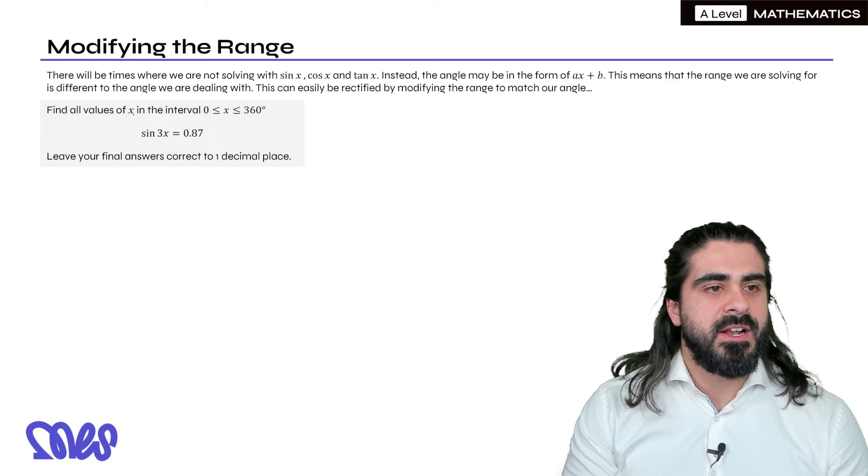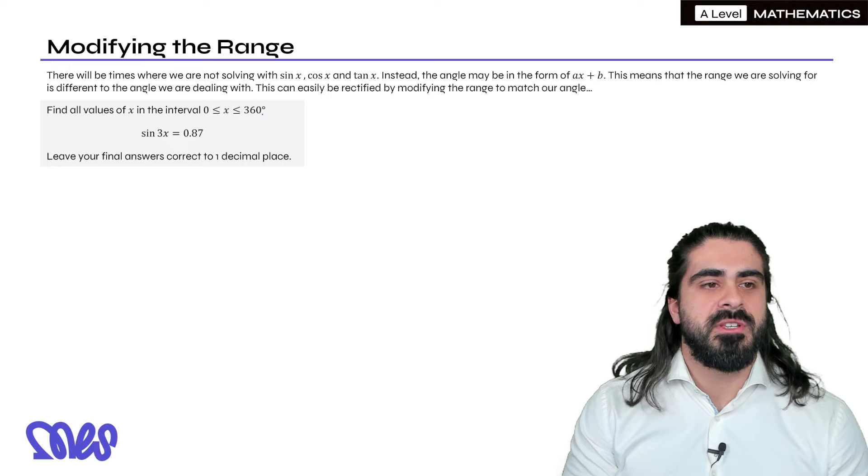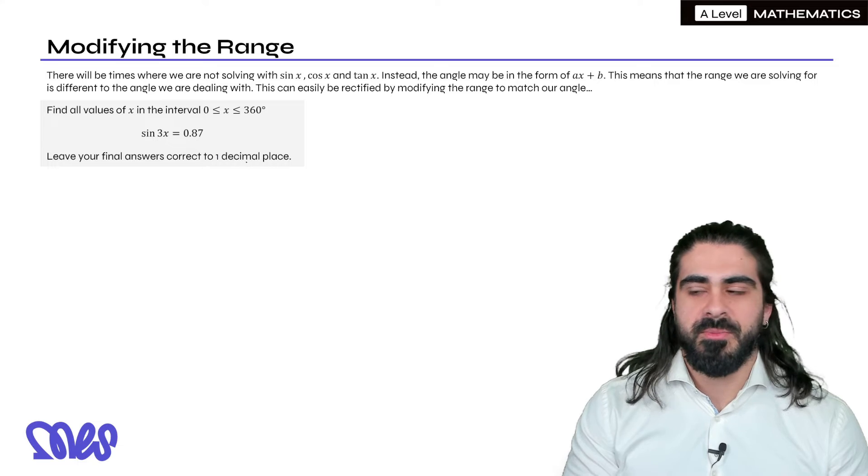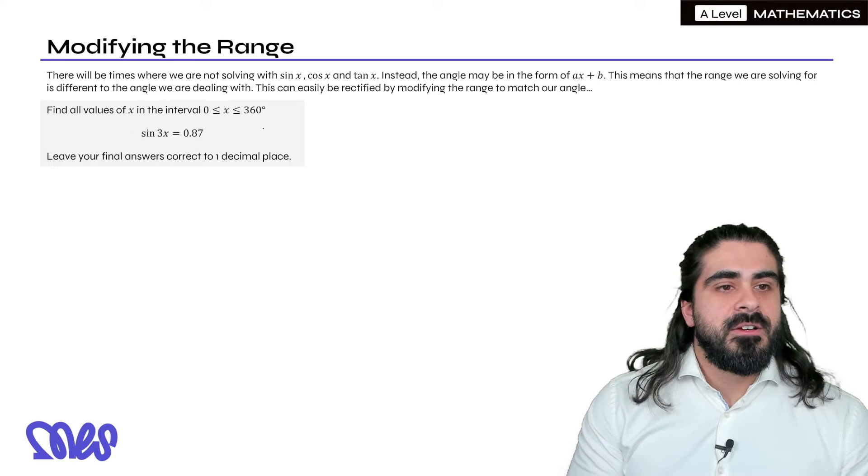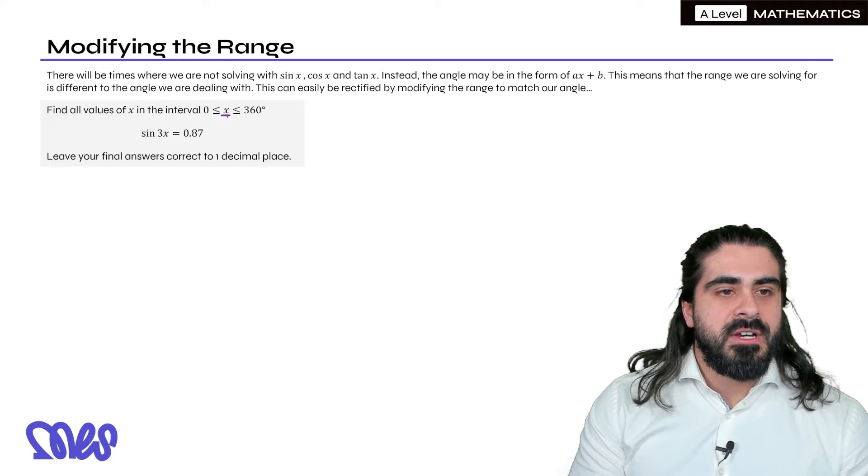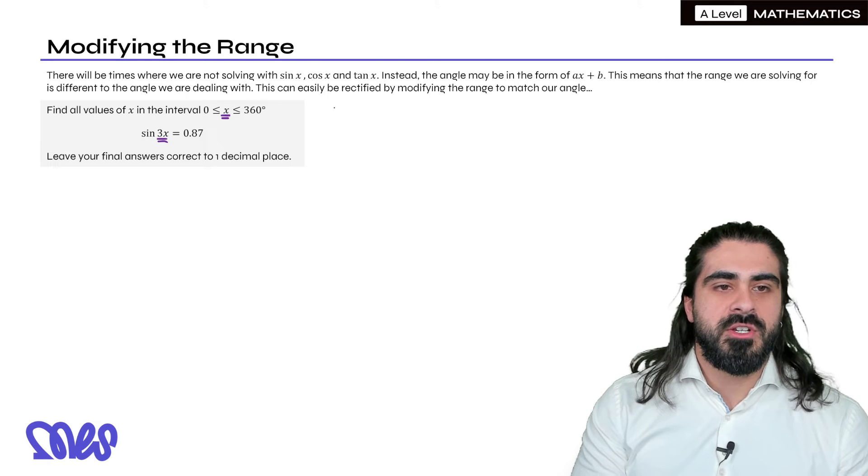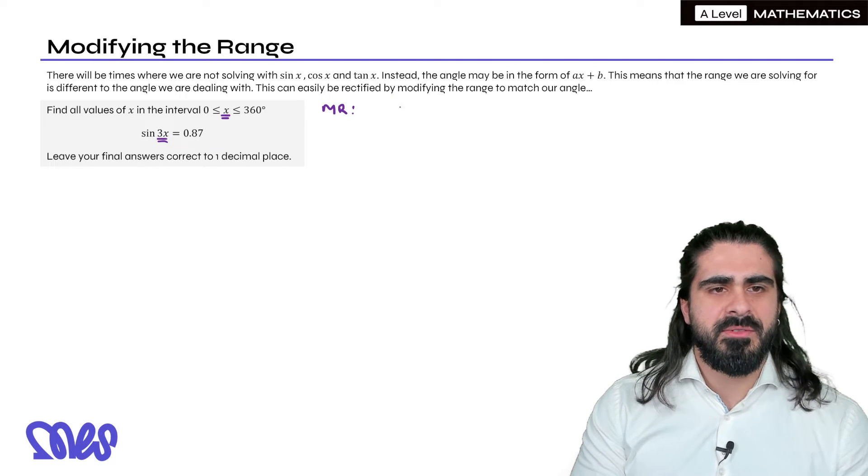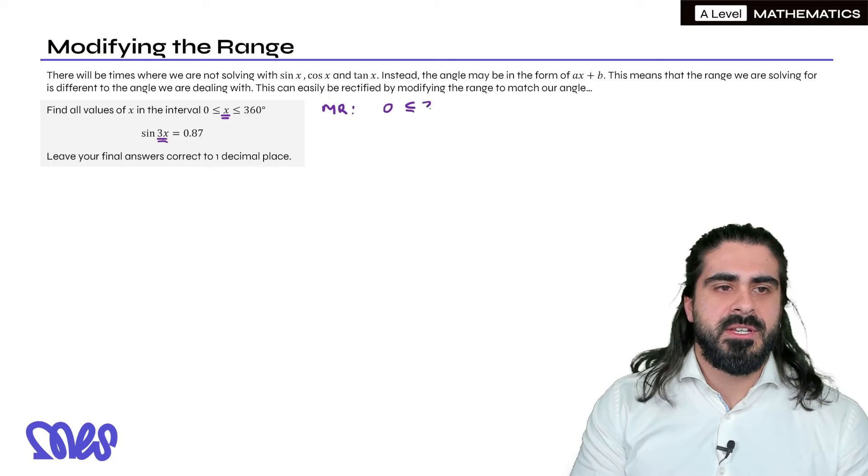So here it says find all the values of x between 0 and 360 such that sine 3x is 0.87. Leave your final answers correct to one decimal place. So we notice that the range angle is x but here we're dealing with 3x. So what we're going to do is we're going to modify the range so that it reflects the angle in question. So we're going to times everything by 3. Timesing everything by 3 we get 1080.